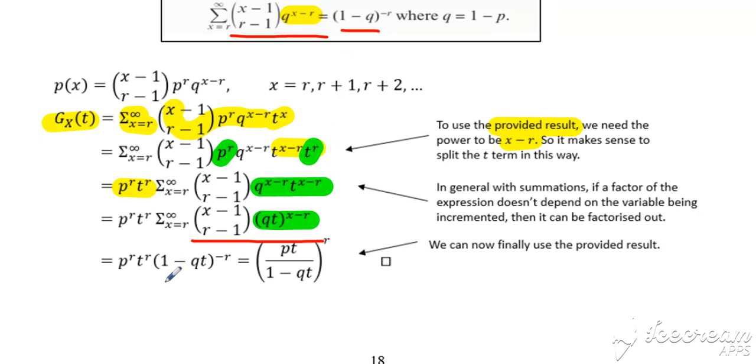And say it's (1-qt)^(-r) multiplied by p^r and t^r. That simplifies - if we take the (1-q) into the denominator - to (pt/(1-qt))^r, which is our probability generating function for the negative binomial.